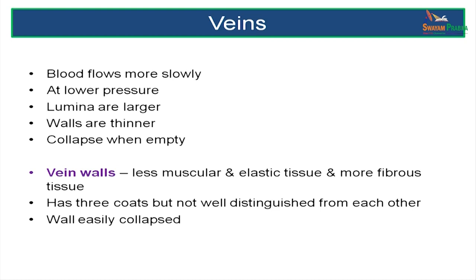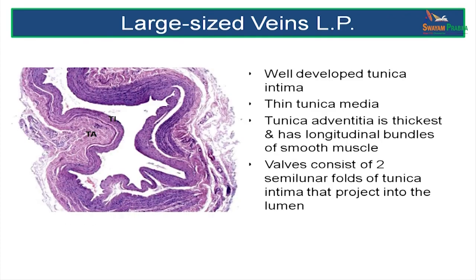Now let us study veins. Veins are larger vessels with thinner walls, having a collapsed lumen and blood at lower pressure. The vein walls have less muscle and more connective tissue. The media of the vein is much thinner than the tunica media of the artery, while the tunica adventitia in a vein wall is more developed. In a large-sized vein, note the collapsed state of its wall. The three layers are a tunica intima, a thin tunica media, and a very thick tunica adventitia, which has longitudinal bundles of smooth muscle.